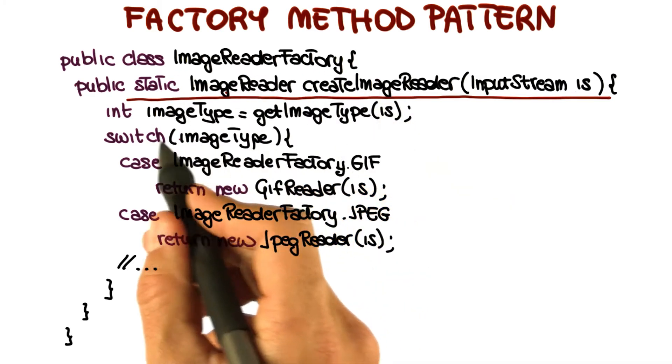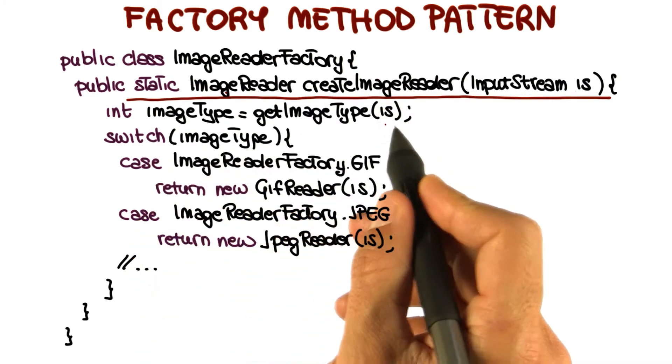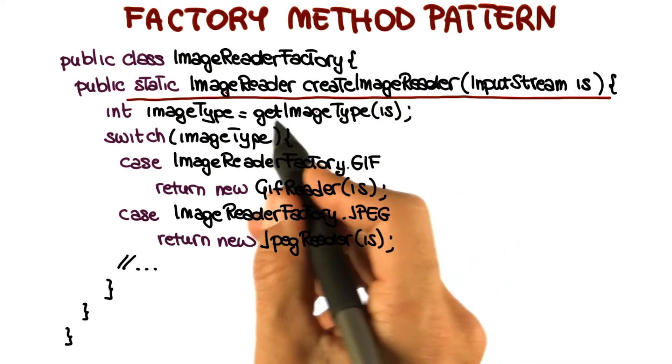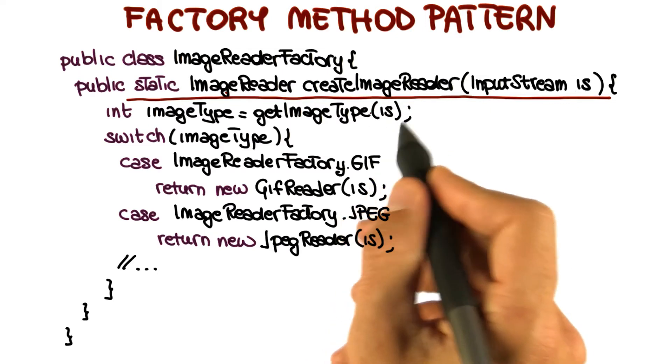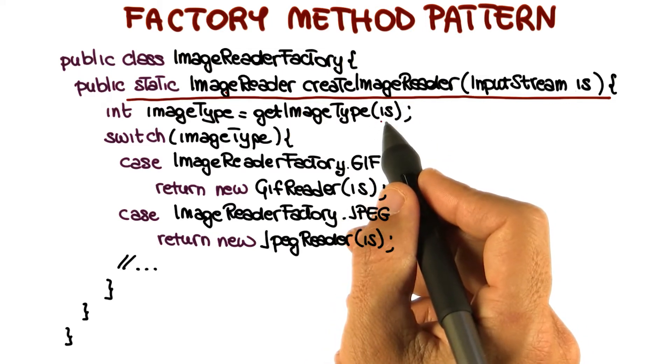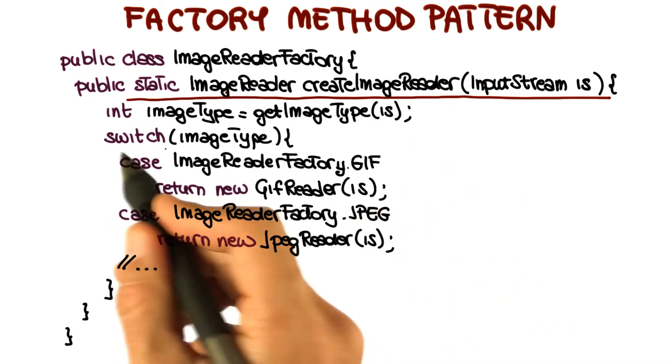So what does the method do? The method first invokes getImageType, passing the InputStream as a parameter. This method figures out the type of the image stored in the InputStream and returns an integer. Then, based on the value of this integer, the method does one of several things.